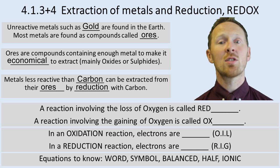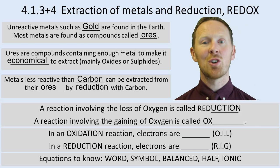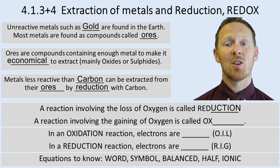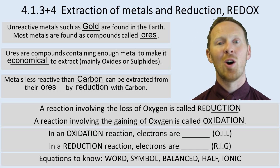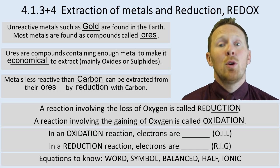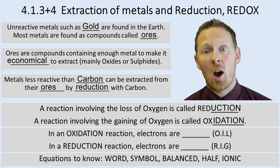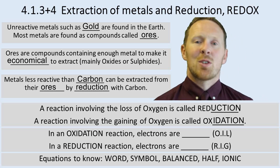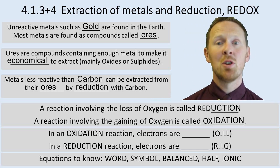A reaction involving the loss of oxygen is called reduction, so if something has lost oxygen, it's reduction. Normally something else has gained oxygen, and a reaction involving the gaining of oxygen is called oxidation — we already know that from section 4.1.1. When you put those reactions together, where oxygen is both lost and gained, it's called a redox reaction. In a redox reaction there is both an oxidation part and a reduction part.